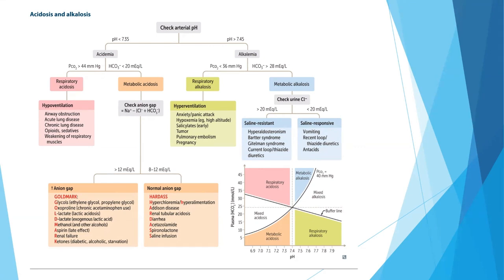In alkalemia with pH 7.45 or more: if pCO2 is less than 36, it is respiratory alkalosis; if bicarbonate is elevated, it is metabolic alkalosis. For metabolic alkalosis, also check the urine chloride level. If urine chloride is more than 20, it is saline-resistant, due to causes like hyperaldosteronism, Bartter syndrome, or Gitelman syndrome. If less than 20, it is saline-responsive, due to vomiting, thiazide diuretics, or antacids.